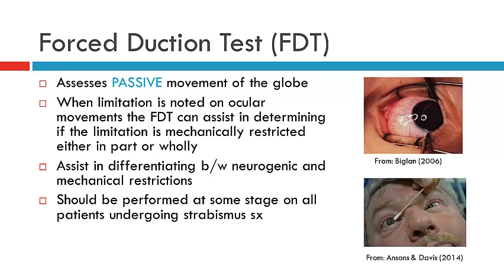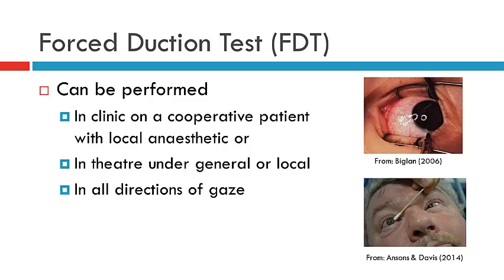You are able to assess forced duction in all positions of gaze, to assess each extra-ocular muscle for mechanical restriction. The forced duction test can be performed in clinic, but the patient will need to be cooperative — so children generally will not have this performed in clinic. The alternative is to perform it in theatre, and it can be performed in all directions of gaze.